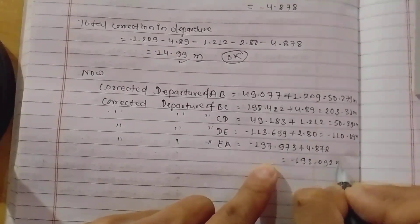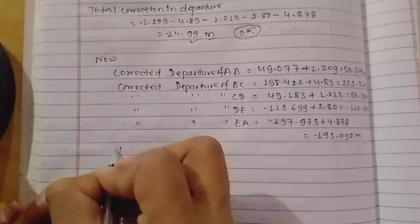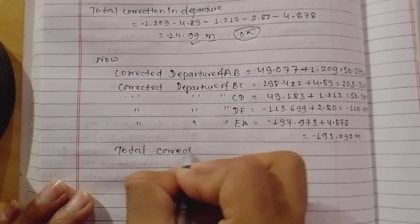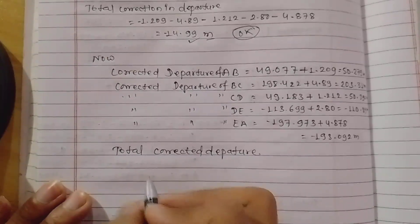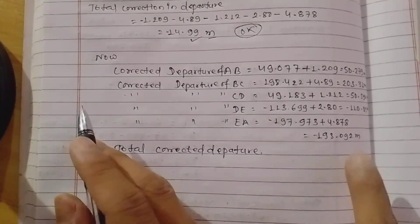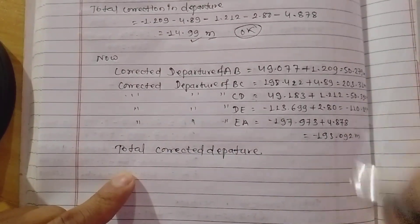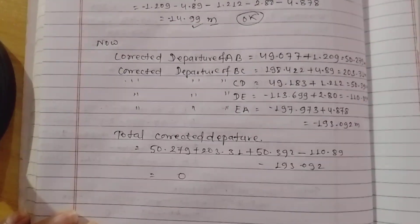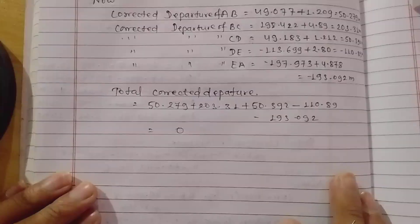Total collected departure — presenting total corrected departure. Now looking at the table. Corrected latitude and corrected departure values are presented in a table. Collection for sum of the calculations.